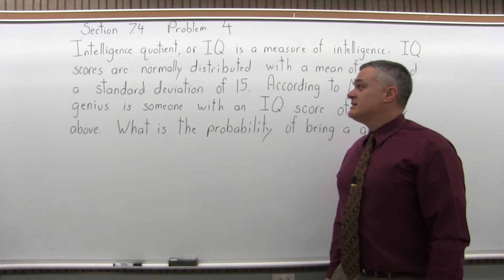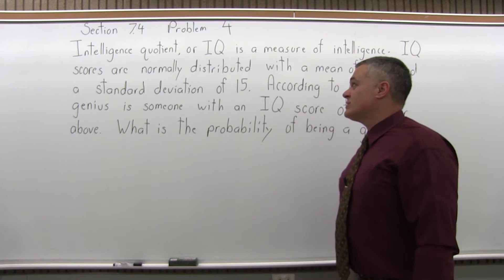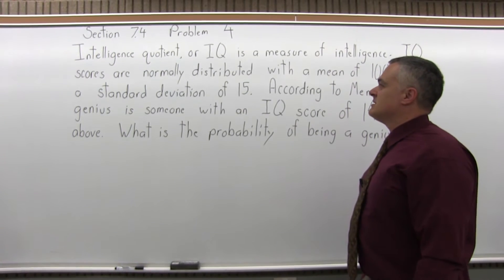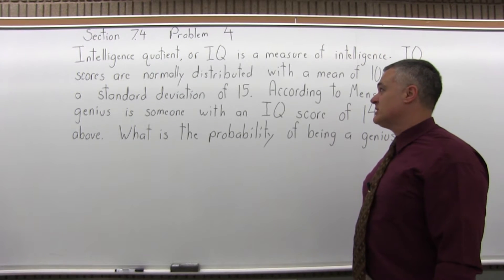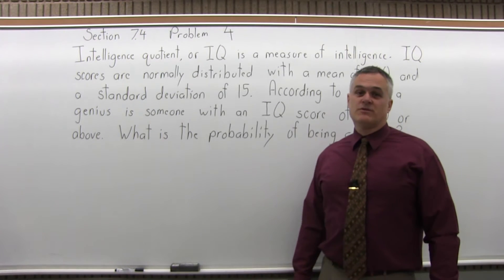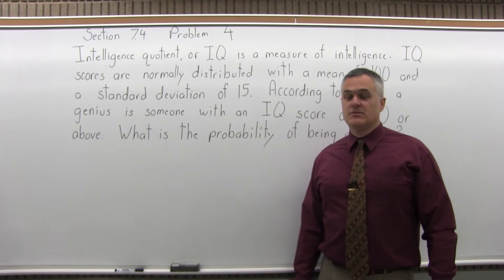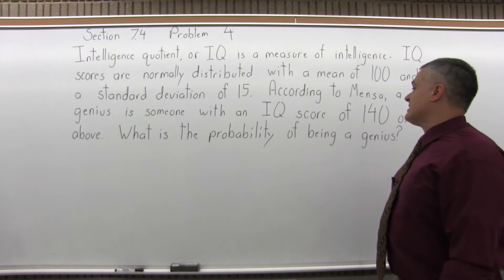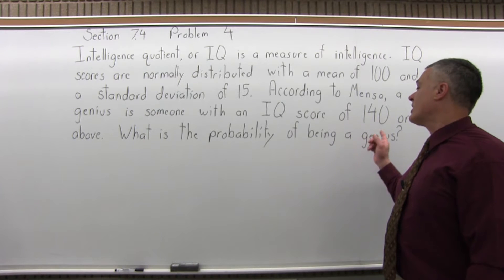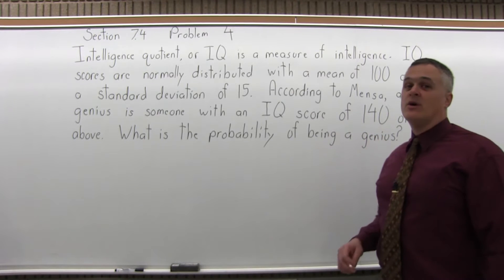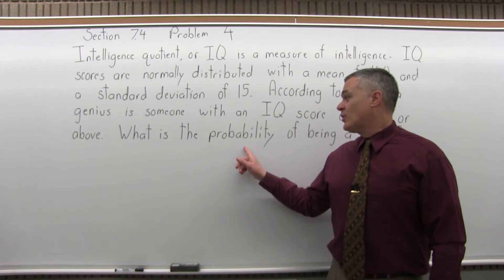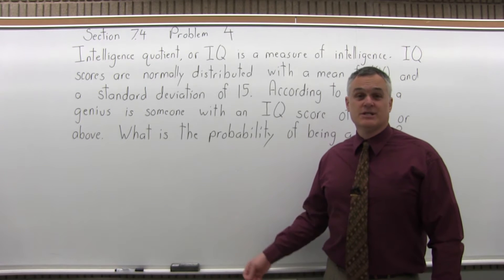It says: Intelligence Quotient, or IQ, is a measure of intelligence. IQ scores are normally distributed with a mean of 100 and a standard deviation of 15. According to Mensa, a genius is someone with an IQ score of 140 or above. So what is the probability of being a genius?